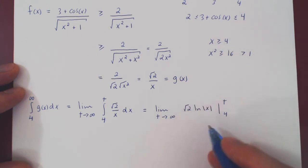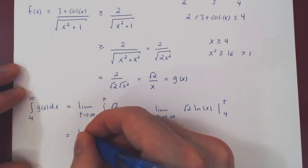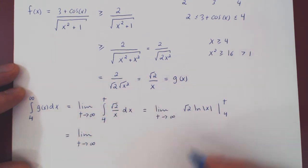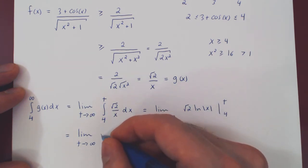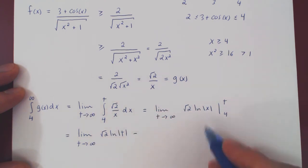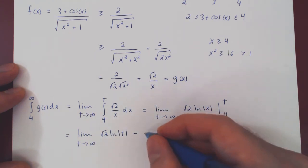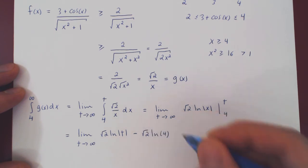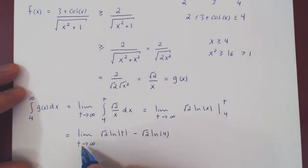The integral of √2/x is simply √2 times the ln of x in absolute value. Let's evaluate our antiderivative at both endpoints and subtract. We'll have √2 ln(t) - √2 ln(4). This is a constant, and as t goes to infinity, so does ln(t).